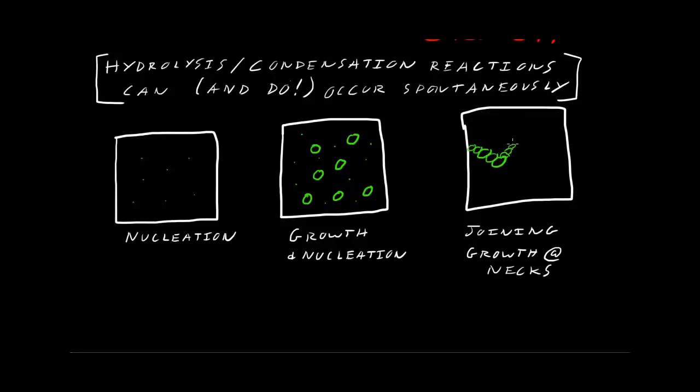And what you end up with is a structure that resembles a tangled web of pearl necklaces. That's the best description you can give. So that's the structure, and it grows and grows until it's exhausted all of the silane that's in the solution, and then you have your solgel.